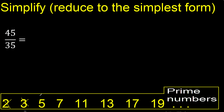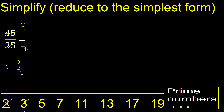Can be divided by 5. Therefore, 45 divided by 5 is 9, and 35 divided by 5 is 7. Finish, because they cannot be divided by any other same number.